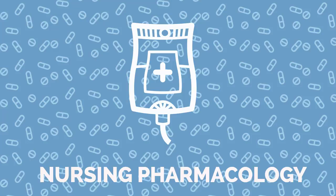Ondansetron, also known by the trade name Zofran, is indicated for the treatment of nausea and vomiting, and works by blocking effects of serotonin on the vagus nerve and in the CNS. The therapeutic classification of Ondansetron is an antiemetic, and the pharmacologic class is a 5-HT3 antagonist.